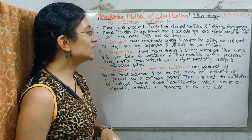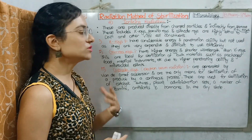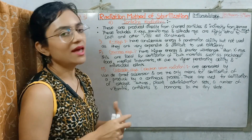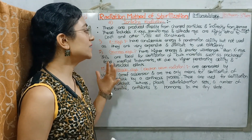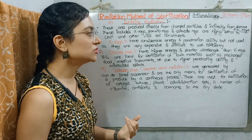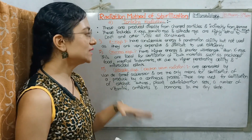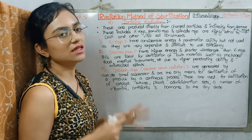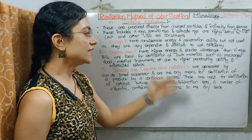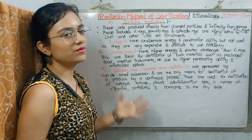Gamma rays have more energy and shorter wavelength compared to X-rays. They are ideal for sterilization of bulk materials such as packaged food and medical instruments. Their penetrating ability and microbicidal effects are also very good.